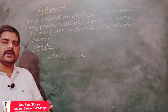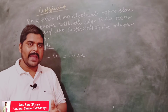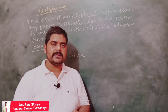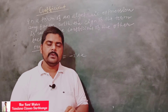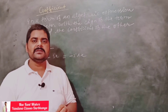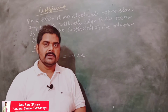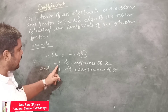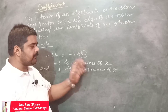In an algebraic expression, the terms can easily be expressed as the product of their factors. There are two types of factors: numerical factors and literal factors. Each factor is known as the coefficient of the other factors. For example, in minus 5x, minus 5 is the coefficient of x, and minus x is the coefficient of 5.